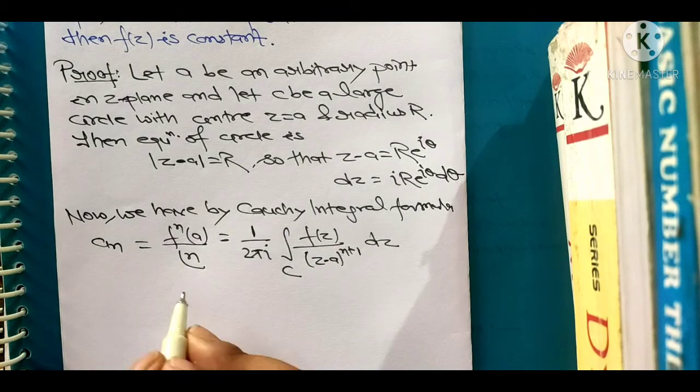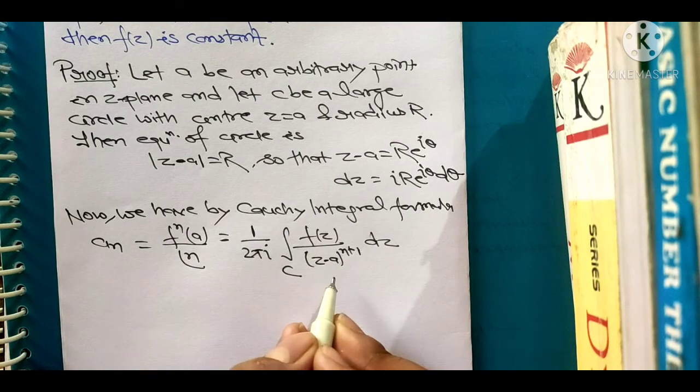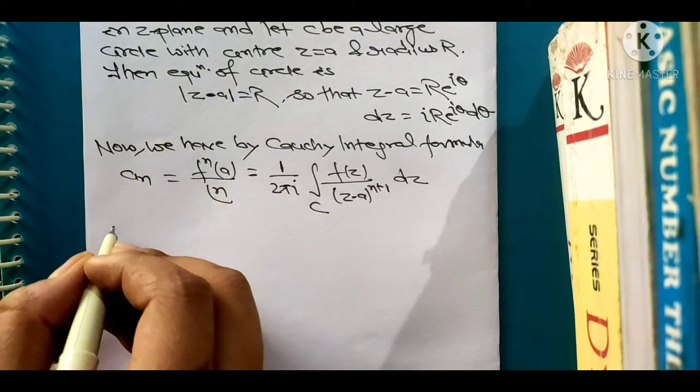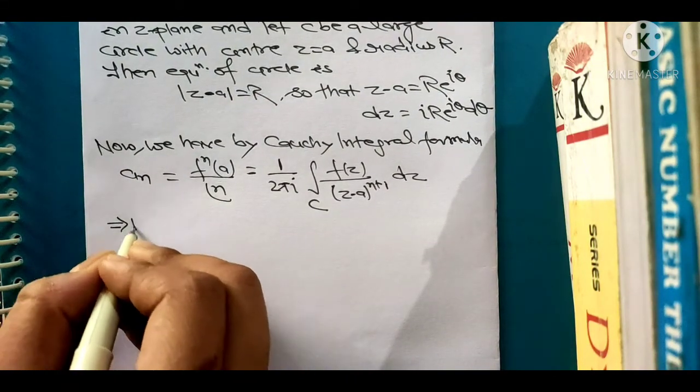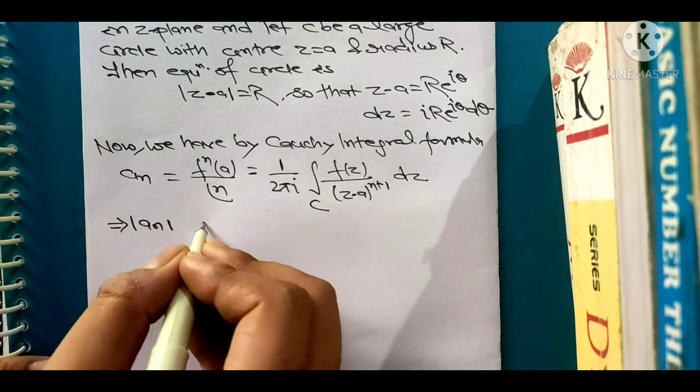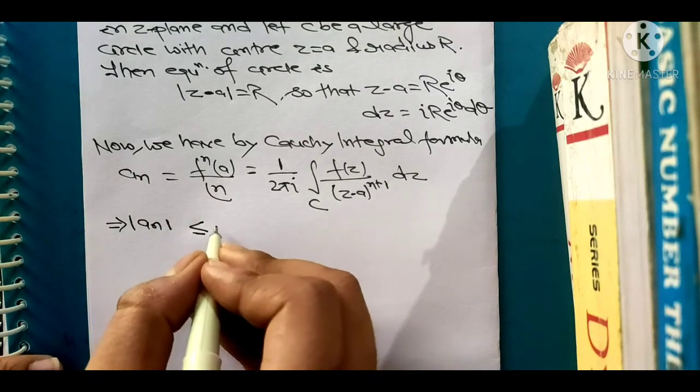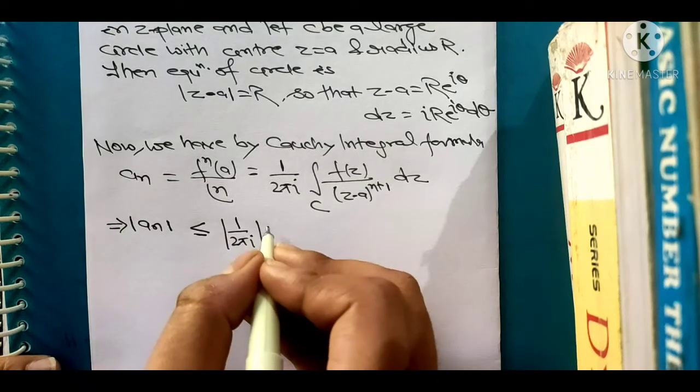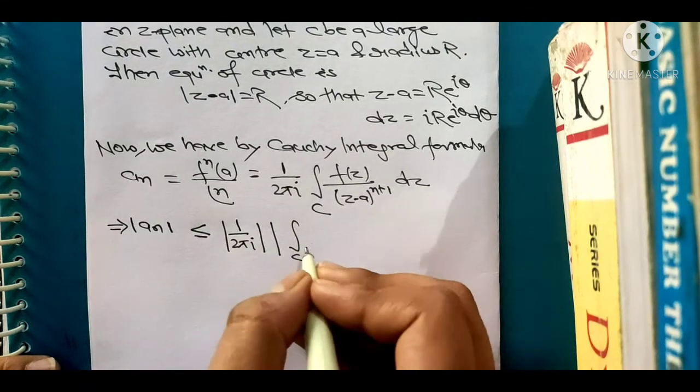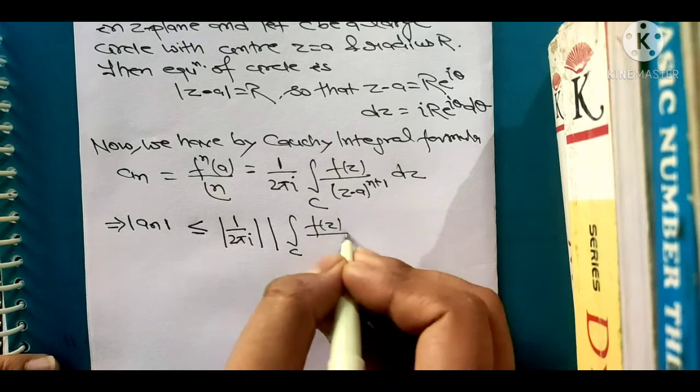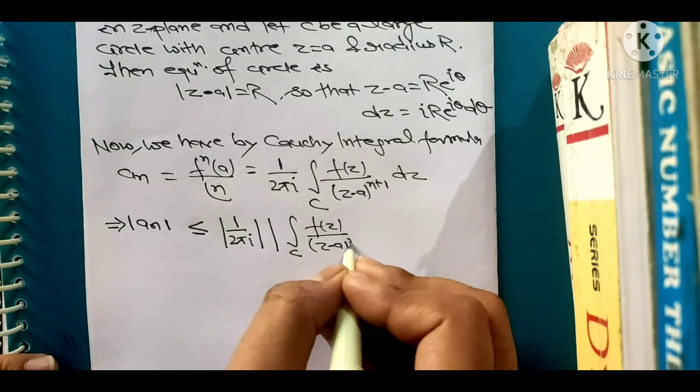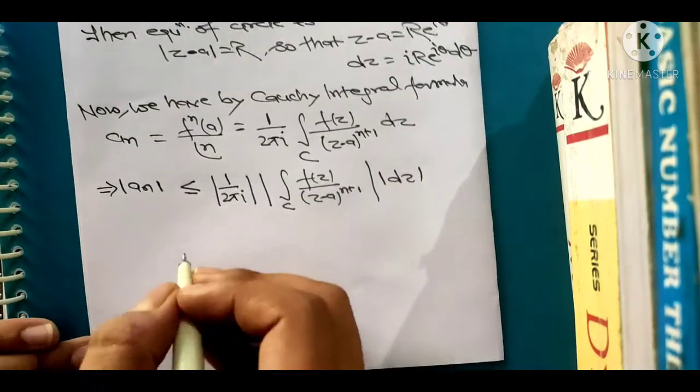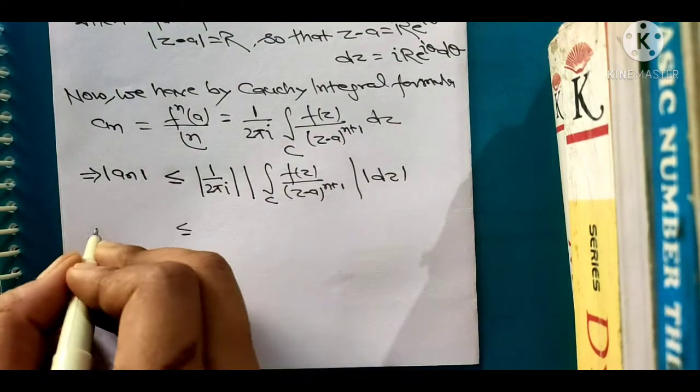This is the formula for Cauchy integral formula. After applying modulus we get this is less than or equal to mod of 2 pi i times mod of integral over C of f(z) over (z minus a) to the power n plus 1 times mod of dz. Now we are going to put the value.